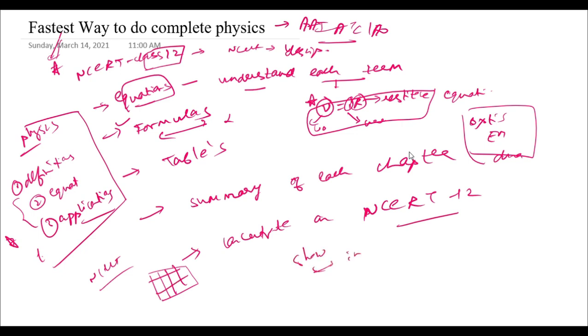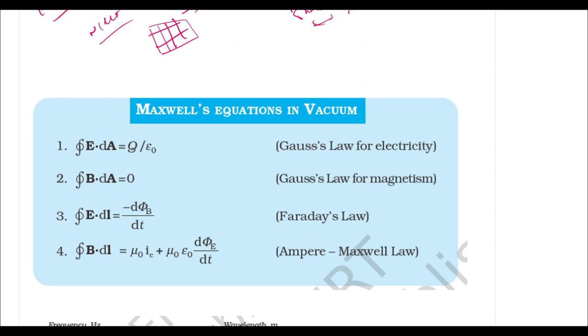At the end of the book, there is a summary of each chapter. Let's say I've taken this from the EM wave chapter of class 12, page 284. They have clearly given the summary of all the Maxwell equations in vacuum. This is Gauss's law for electricity, this is Gauss's law for magnetism.